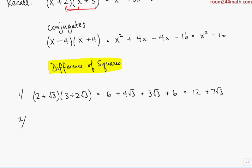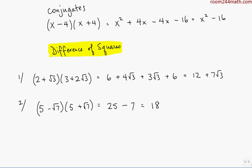Now let's look at a difference of squares pattern with a pair of conjugates: (5 − √7)(5 + √7). Instead of using FOIL, we go straight to the result. Square the first term: 5 squared is 25. Write a minus, then square the second term: √7 squared is 7. So we get 25 minus 7, which is 18. We started with two expressions both containing radicals and ended up with no radicals at all — this is why this is such a useful property, and we'll use it extensively.